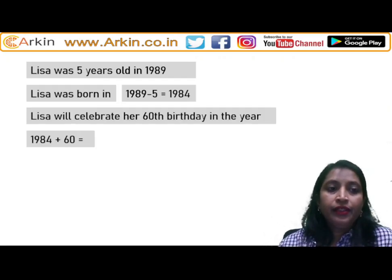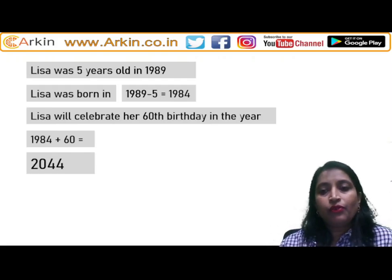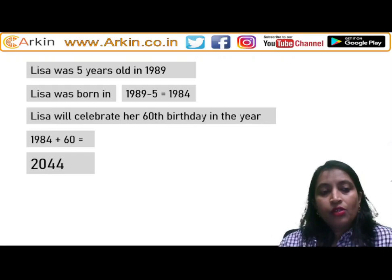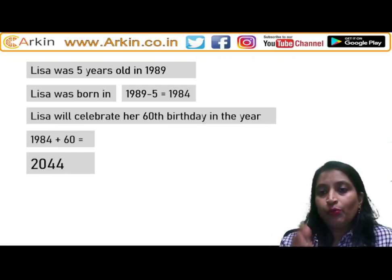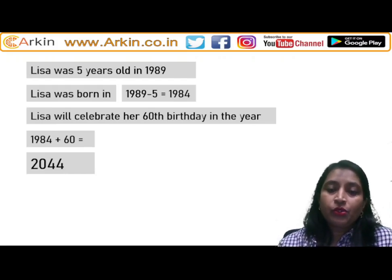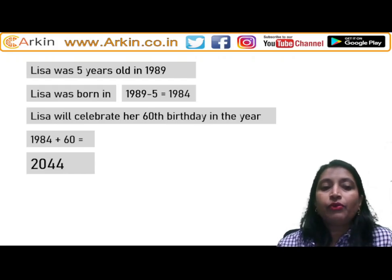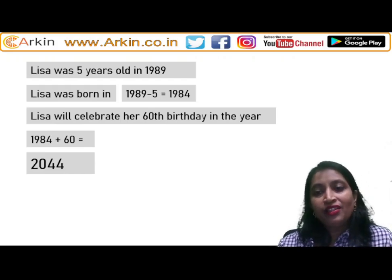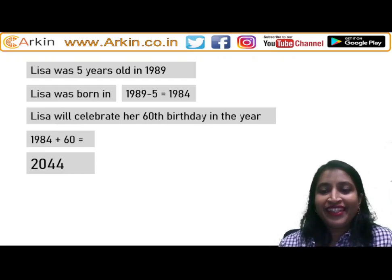Lisa will celebrate her 60th birthday in 1984 plus 60, which equals 2044. That is the answer. This was not a difficult question — once you put down all the given points, you just need to bring all the information together and see how to use it. I hope you all understood. Thank you.